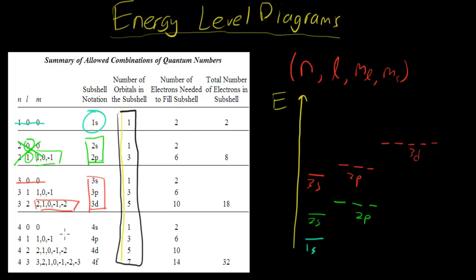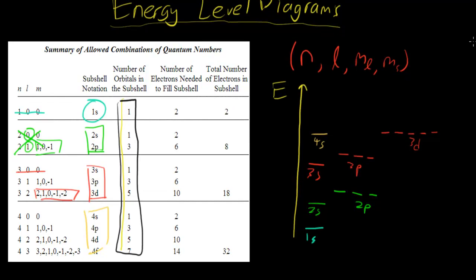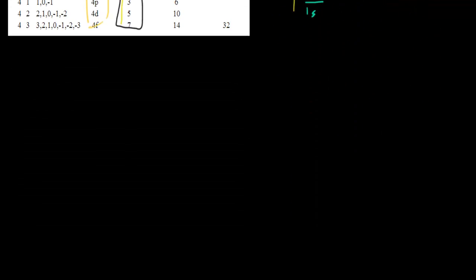Now, a weird thing happens when you get to 4s. The reason why it's weird is because 4s is actually located in between 3p and 3d. 4s is somewhere in here, somewhere in between 3p and 3d. Once you get to 4s, things start getting weird because energy levels kind of mix in between themselves. So a quick handy tool for memorizing how these levels are arranged is using something called an Aufbau diagram.